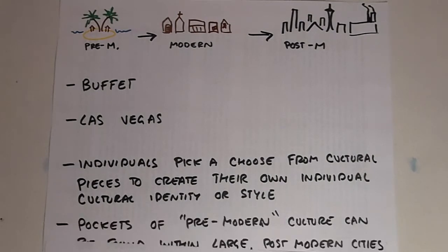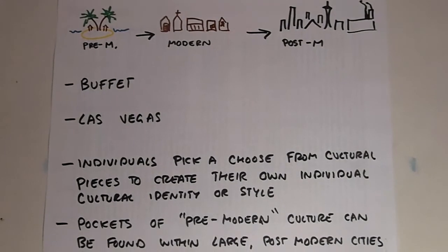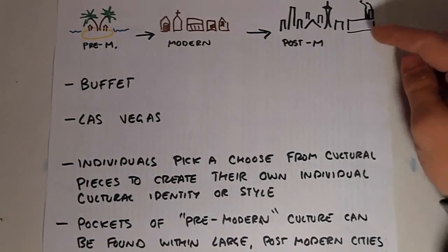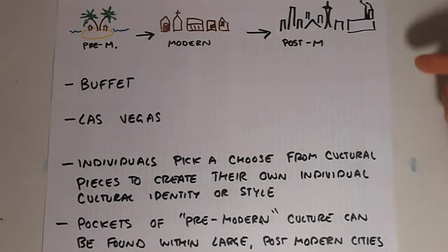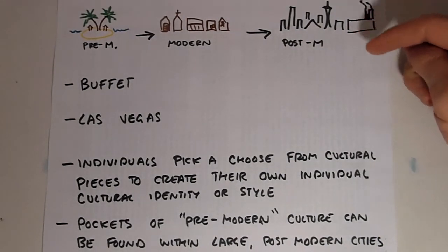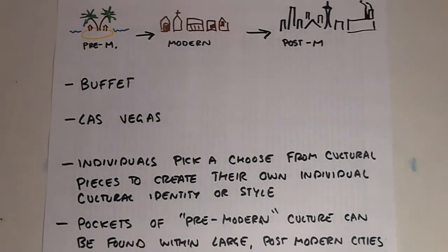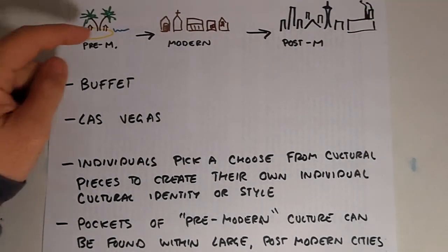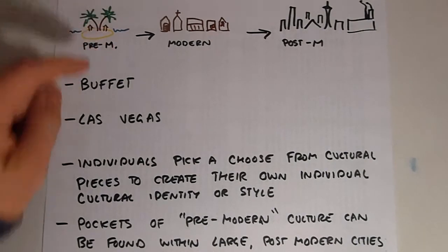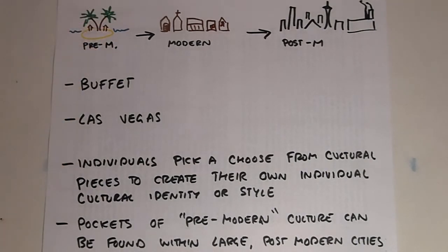Sometimes within a postmodern society, we may find pockets of pre-modern culture. We call these subcultures. For example, the punk rockers that live in a big city might have a pre-modern kind of culture within their own group, but they're just one piece in this larger postmodern society.